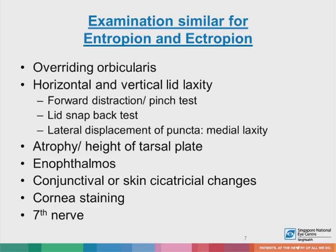For examination — again similar for entropion and ectropion — we need to look for overriding of the orbicularis, horizontal and vertical lid laxity assessed with the forward distraction or pinch test, a lid snapback test, lateral displacement of the punctum which signifies medial laxity, atrophy or height of the tarsal plate, enophthalmos measured with a Hertel's exophthalmometer, conjunctival or skin cicatricial changes, as well as corneal staining and presence or absence of seventh nerve palsy.